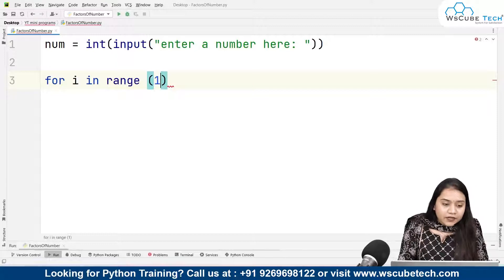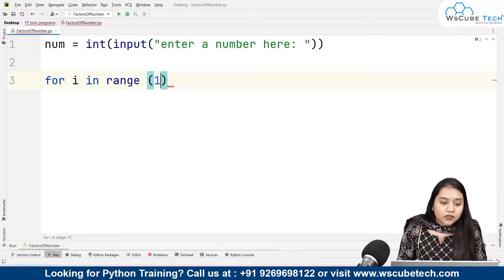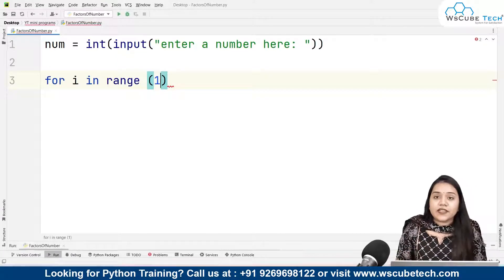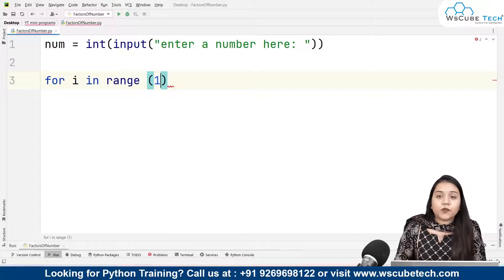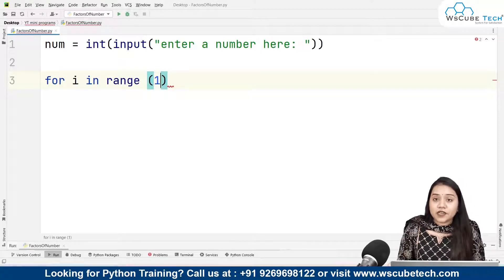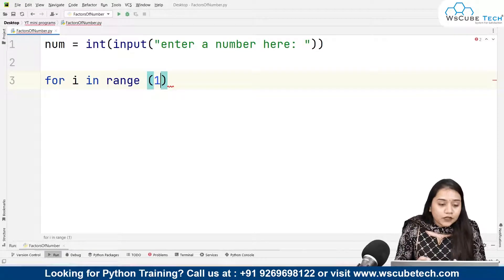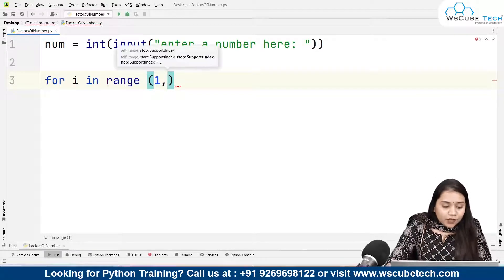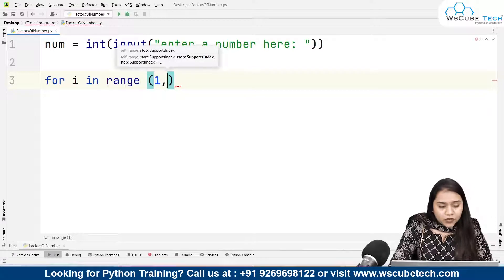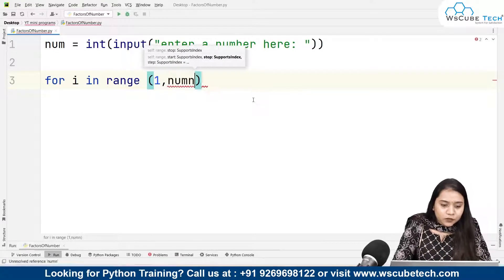So whatever our number is, suppose if our number is 12, it will go up to the range of 12 and check that any number from 1 to 12 when divided by 12 gives the remainder 0. In that condition, that number is a factor of our number. So what we will be doing, we'll be writing from 1 to number plus 1, because right now we don't know what is that number.